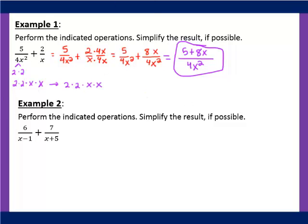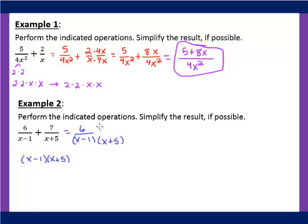Example 2 actually gets easier when you have denominators like x minus 1 and x plus 5, because we can guarantee the common denominator is going to be (x minus 1)(x plus 5). This first fraction needs an x plus 5 since it already has an x minus 1, so we multiply x plus 5 to the top and bottom. The second fraction has x plus 5 so we multiply it by x minus 1.